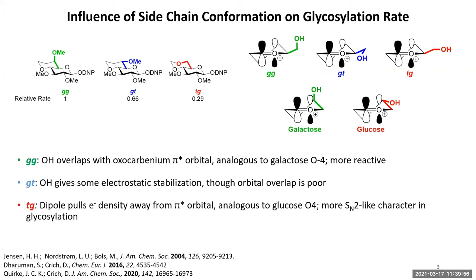The influence that these conformations have on glycosylation is really quite interesting. In some seminal studies carried out by the Bowles group in 2004, Bowles and co-workers synthesized three conformationally locked donors where each one has the side chain restricted in a different conformation. They found that under the same glycosylation conditions, the GG compound reacts significantly faster than the GT, which in turn reacts much more quickly than the TG. The reasoning is that in the GG conformation, the lone pair of the side chain oxygen can overlap nicely with the oxycarbenium pi-star orbital, thereby stabilizing the positive charge that develops over the course of the reaction and thus maximizing reactivity. This is in fact analogous to the axial OH of galactose rendering that sugar about seven times more reactive in glycosylation.